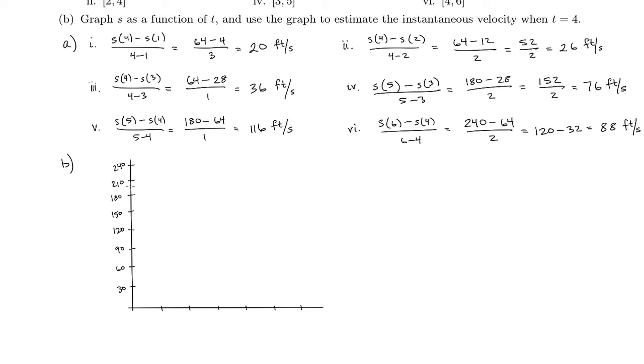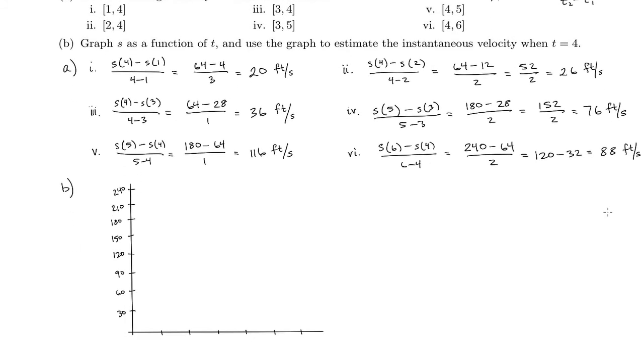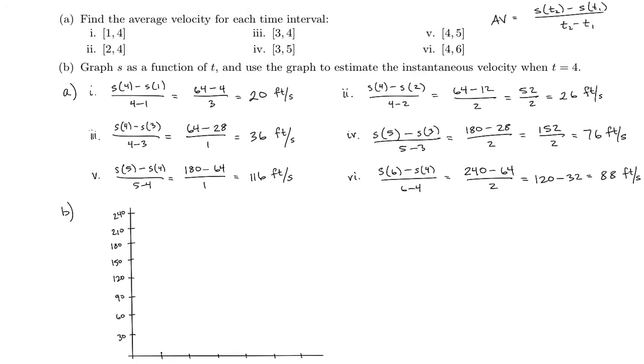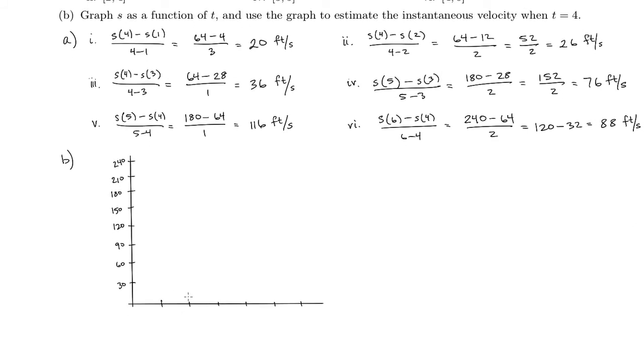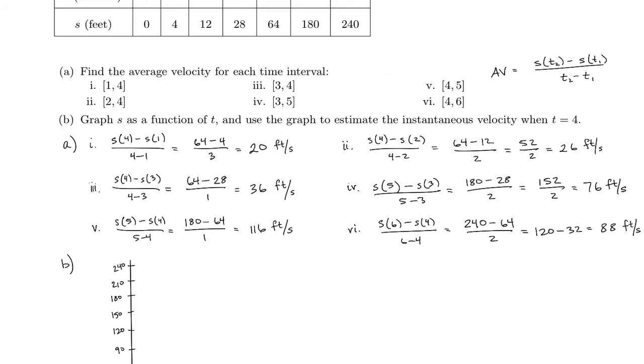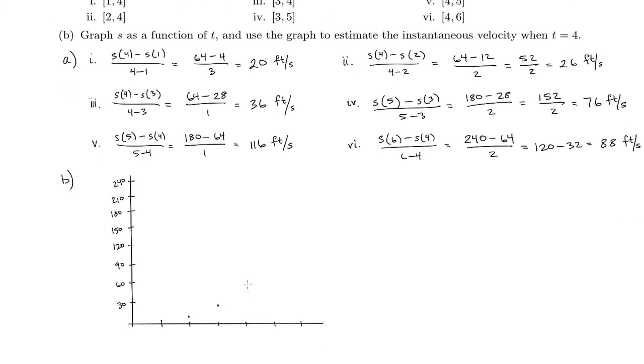Now we'll just plot our points. We've got 0, 0, 1, 1, 4, which is nice and tiny, 2, 12, 3, 28. So 2, 12, 3, 28. And then 4, 64, 5, 180. So 4, 64, 5, 180. And then 6 and 240.